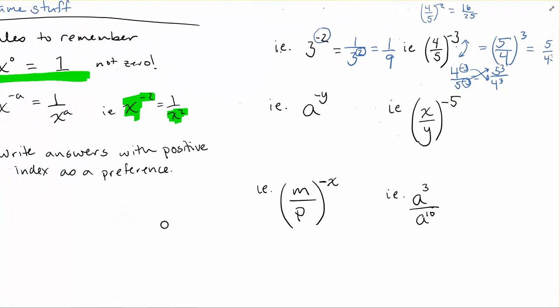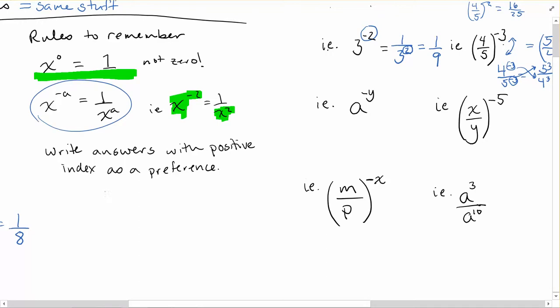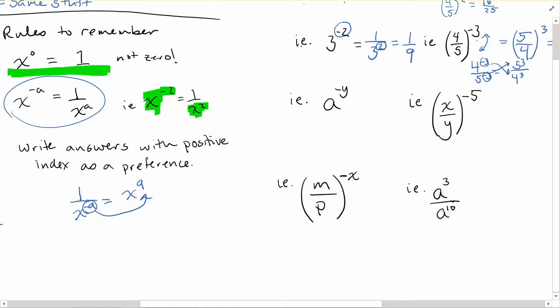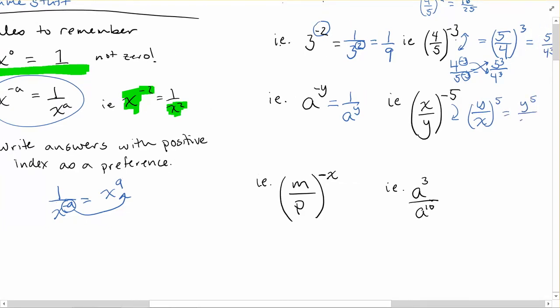We can add to our rules: 1 over x to the negative a equals x to the positive a on top — negative on the bottom becomes positive on the top. Applying this: a to the power of negative y, with a negative power as the numerator, becomes 1 over a to the y. For a fraction like (x/y) to the negative 5, flip it upside down to get (y/x) to the power of 5, which can be written as y to the 5 over x to the 5.